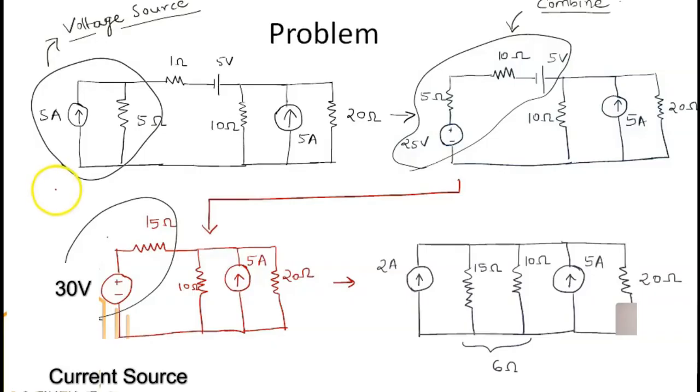This is a problem on source transformation. Here we have to find out the current passing through the 20 ohm resistor, and this is the circuit given to us. Now we have to convert different sources into the respective changes, such as current sources into voltage sources as required.